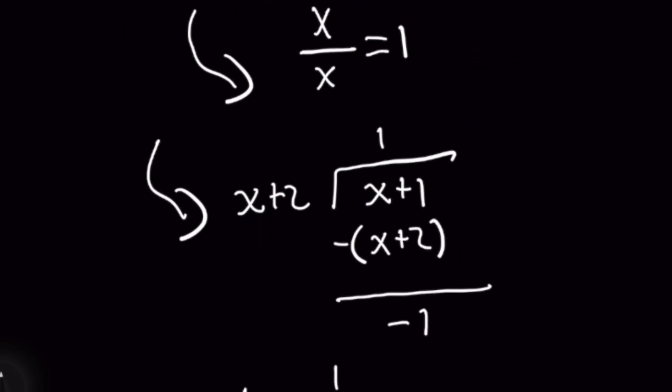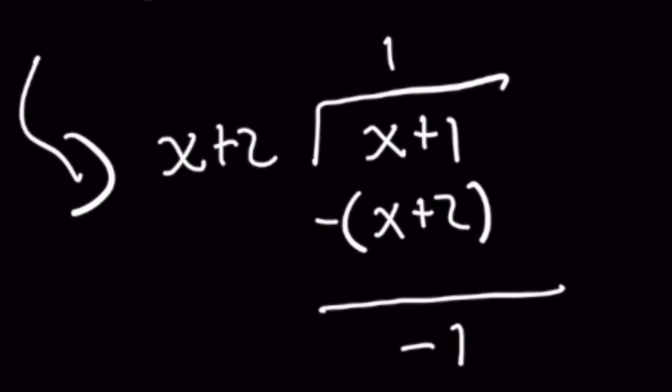So we're going to write a value of 1 in our quotient and then just like before for normal division we'll take that quotient value of 1, multiply it by every term in the divisor which would give you 1 times (x plus 2) resulting in x plus 2 itself and then we're going to subtract that entire thing from the dividend.